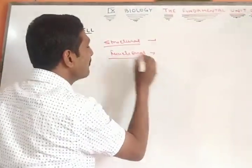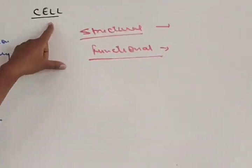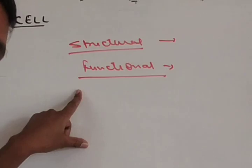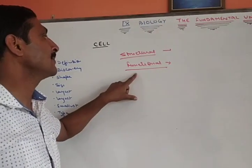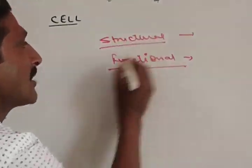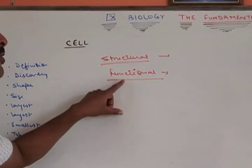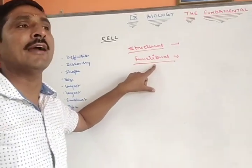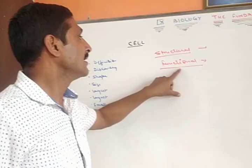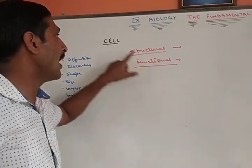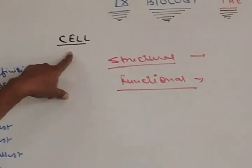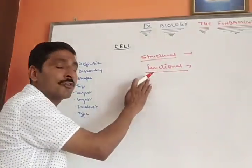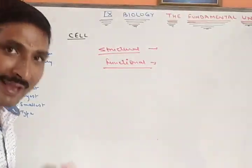The next term is functional unit. Every cell is capable of performing certain vital functions of life. No function related to life is performed outside the cell. That's why cell is also called as functional unit. In other words, all those vital life processes which are necessary for life are also performed by cell.